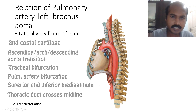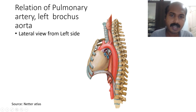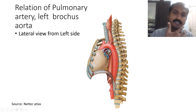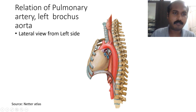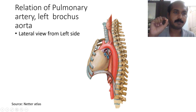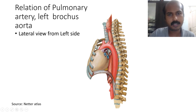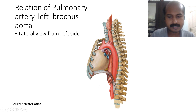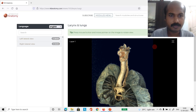Looking specifically at the arch of the aorta, the ascending aorta and anterior part of the arch are anterior, while the distal part of the arch is posterior. The arch of the aorta therefore occupies within its concavity the left principal bronchus — this is extremely important. This view is from the lateral left side.